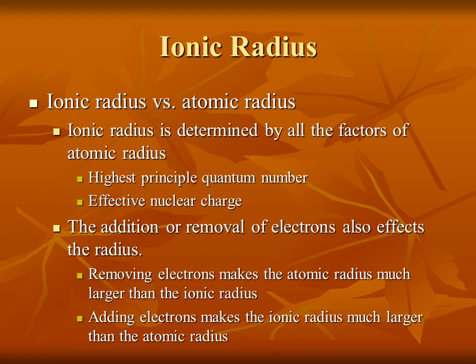Let's look at the differences between ionic and atomic radius. The obvious difference is in the definition. Ionic radius is the radius of an ion. Atomic radius is the radius of a neutrally charged atom. Ionic radius is determined by all the factors that determine atomic radius — effective nuclear charge and highest principal quantum number — as we went through in great detail in the previous presentation. The addition or removal of electrons also affects the radius.